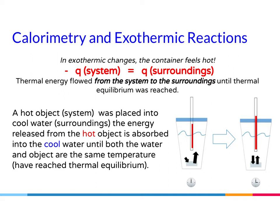Now let's look at an exothermic reaction. In exothermic changes, the container feels hot. Your system is releasing energy to your surroundings. The surroundings would have a positive Q value and your system would have a negative Q value. So, the thermal energy flowed from the system to the surroundings until thermal equilibrium was reached. A hot object was placed into cool water. The energy released from the hot object is absorbed into the cool water until both the water and the object are the same temperature. The water is cooler and the object is hotter, so there's a greater flow of energy from the object to the water and a smaller flow of energy from the water to the object, until eventually thermal equilibrium is reached.